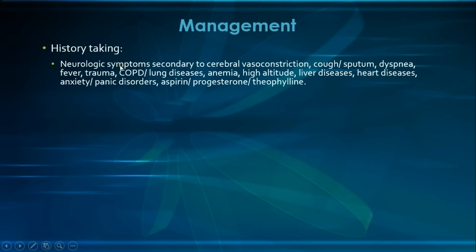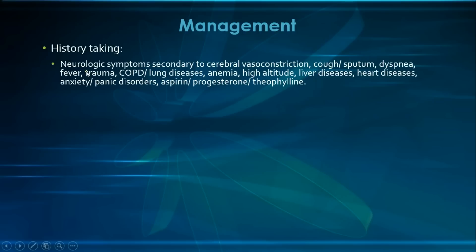We start by asking patients if they have any neurological symptoms secondary to cerebral vasoconstriction, such as dizziness, confusion, syncope, or even seizures. There are other neurological symptoms which occur usually in hyperventilation syndrome, like paresthesias and circumoral numbness. Then we ask about any cough or sputum production, dyspnea, or fever, all of which could indicate different pulmonary causes. And we ask about any history of head trauma or chest trauma, which could indicate pneumothorax.